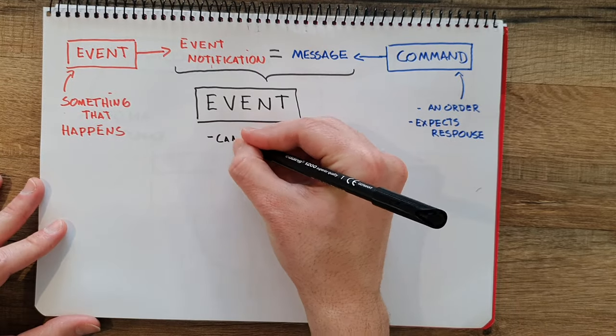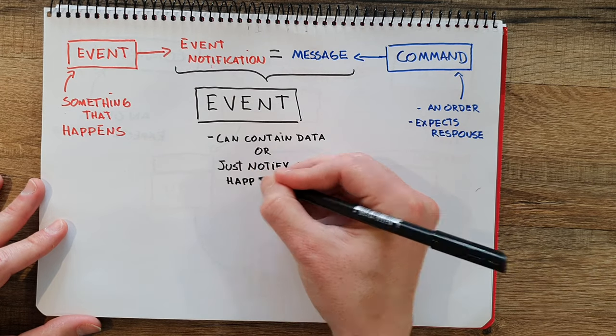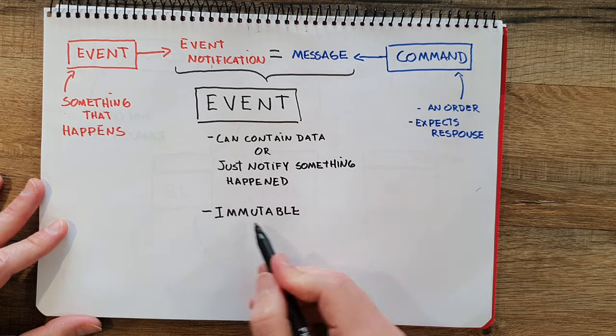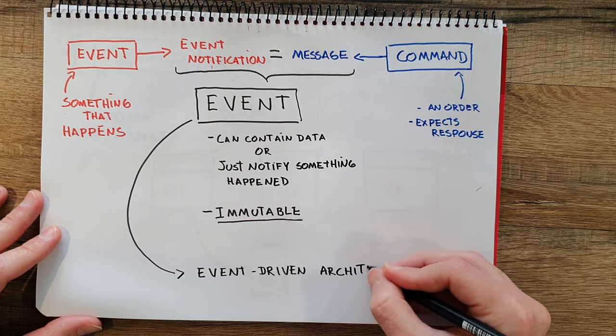If you are a purist, you might disagree with this, and you might be right, because an event is something that happens. It's not a notification or the message associated with events, and it's also very different from the intention of the command. We will see that intention is very, very important later. But since in this channel we try to focus more on the practical side, we will call this an event for the rest of the series. So this event or message has different characteristics — it could contain data associated with the event or the command, or it could just be a notification that something happened. Additionally, something very important is that it is immutable.